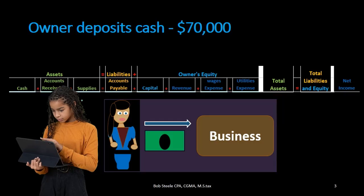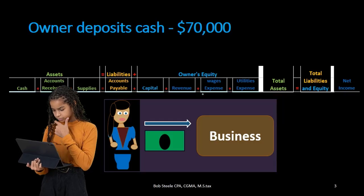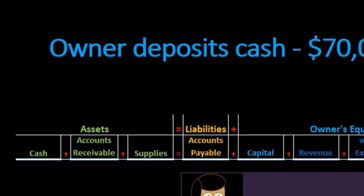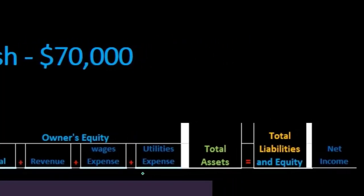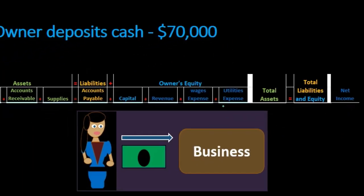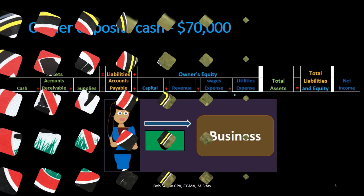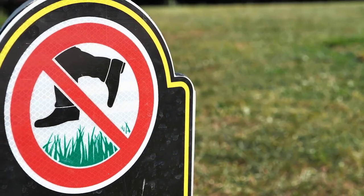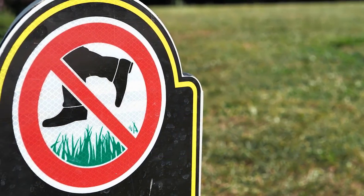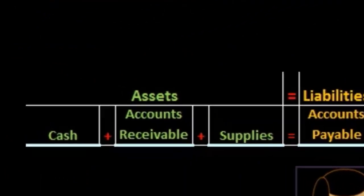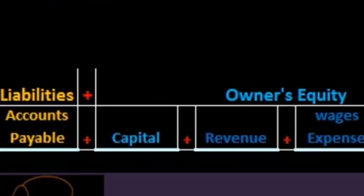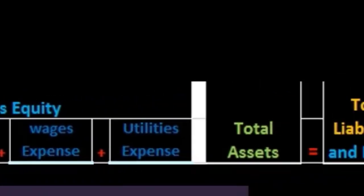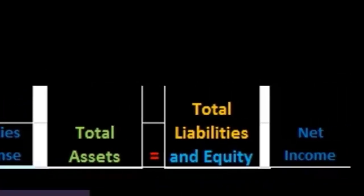As you can see from this example, the accounting equation format can get a bit complex or messy, and it's much easier with debits and credits — that's why we'll move to debits and credits. However, some rules will remain the same: every transaction will have at least two accounts involved, and every transaction will remain in balance.